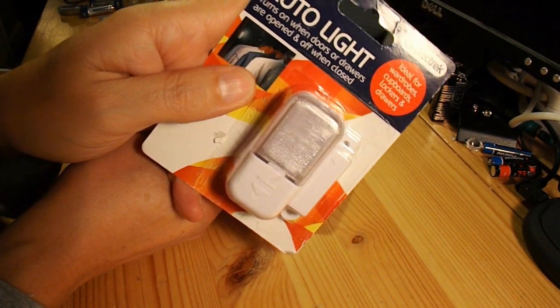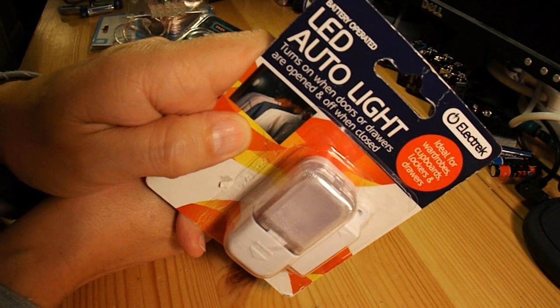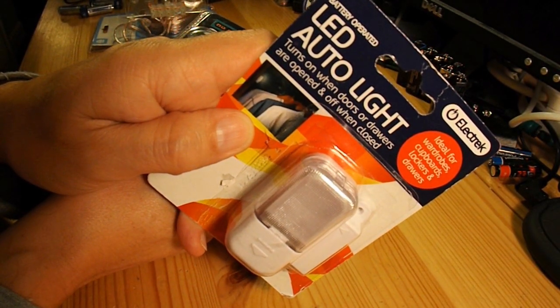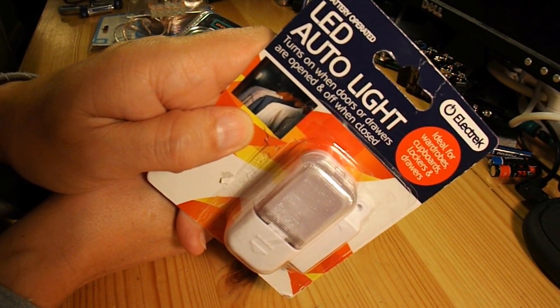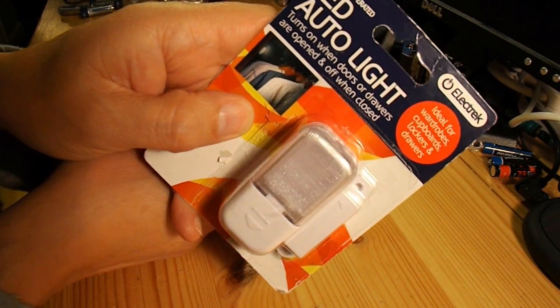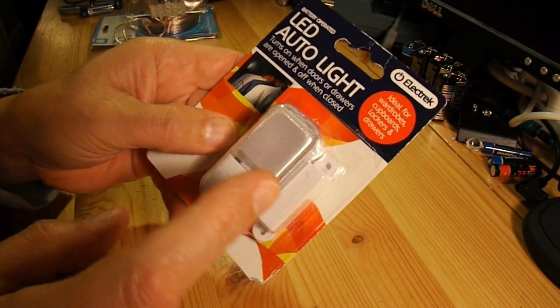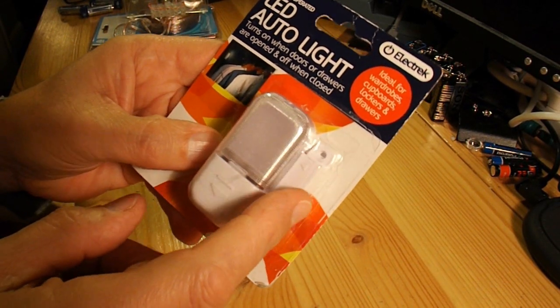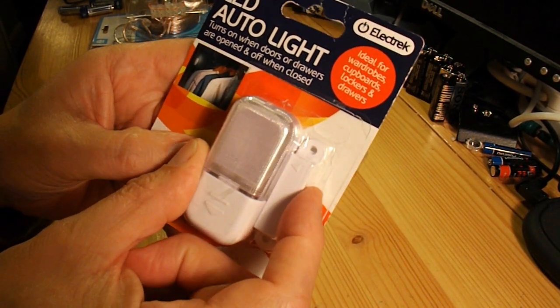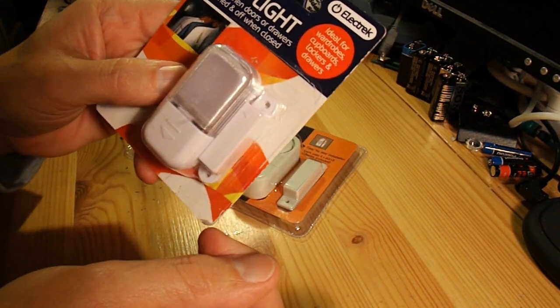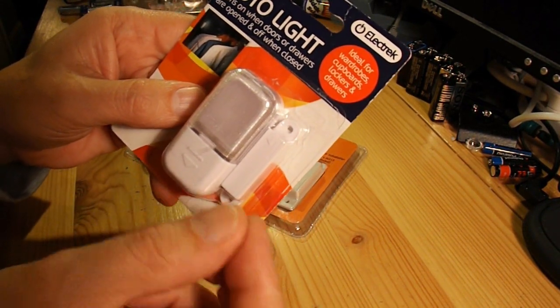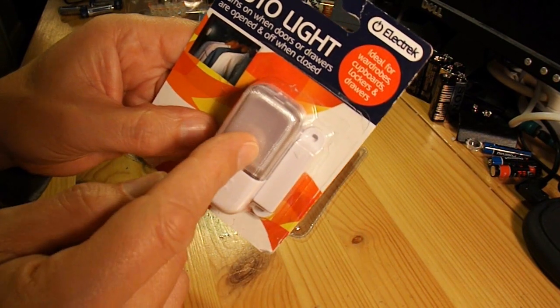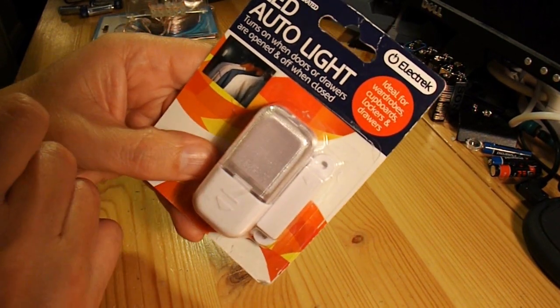This one, LED auto light, turns on when doors or drawers are opened and off when closed. Very simply, there's a reed switch in there and a magnet. When the magnet's next to it, the switch is open. When the magnet's moved away from it, the switch is closed. So that turns the LED on that's in there.